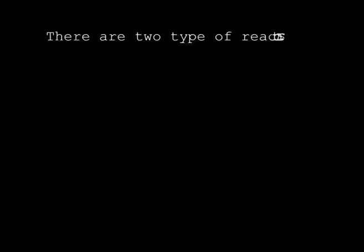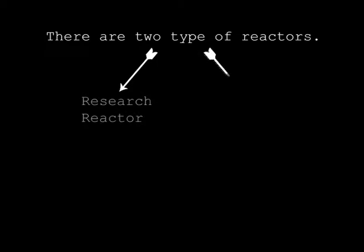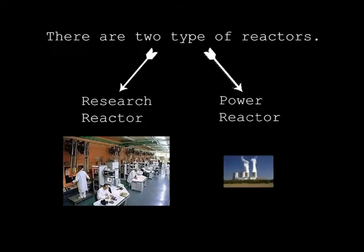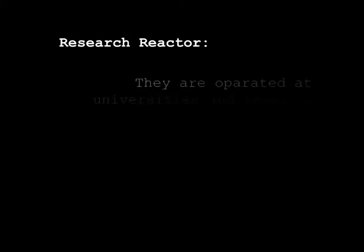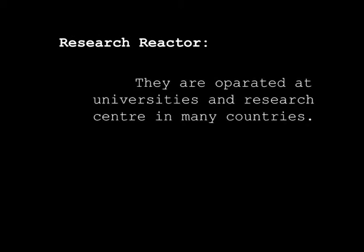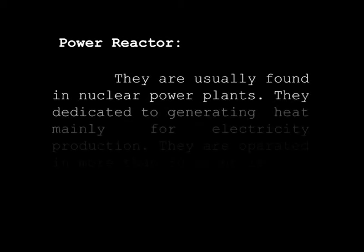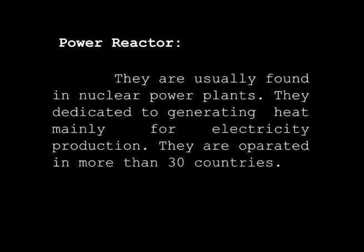There are two types of reactors: Research Reactor and Power Reactor. Research Reactors are operated at universities and research centers in many countries. Power Reactors are usually found in nuclear power plants, dedicated to generating heat mainly for electricity production, and are operated in more than 30 countries.